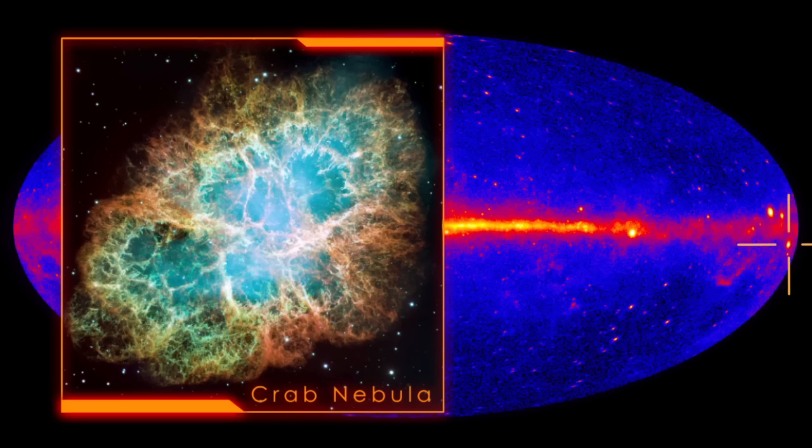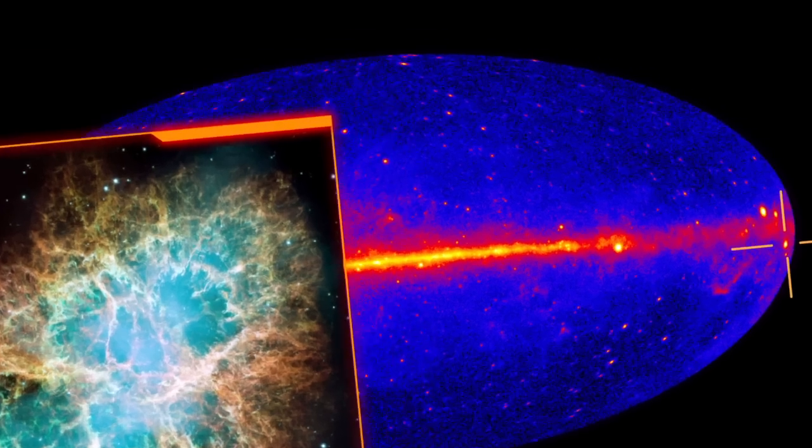As the pulsar spins, its powerful magnetic field causes particles to flow. These currents ultimately light up the nebula.